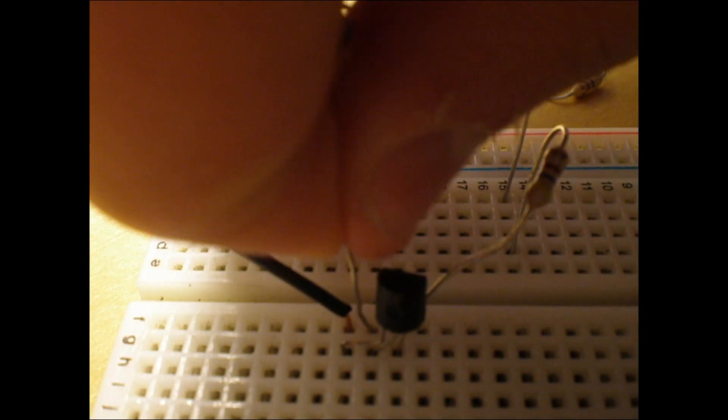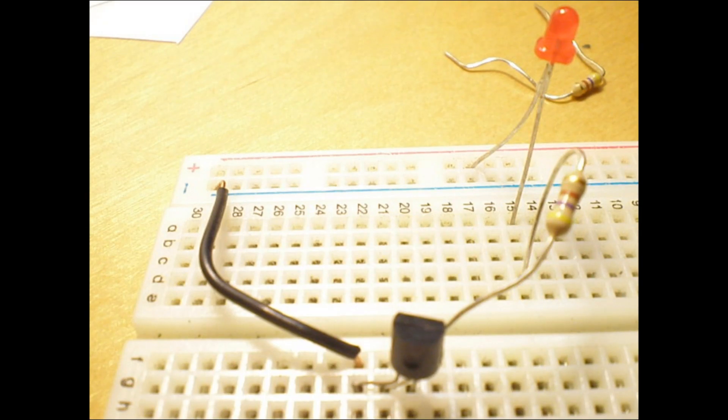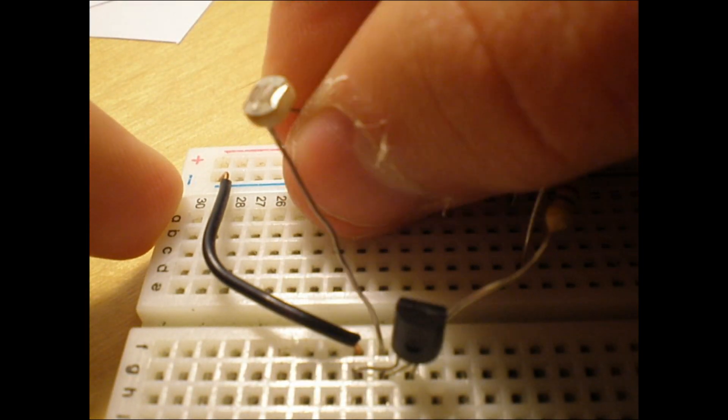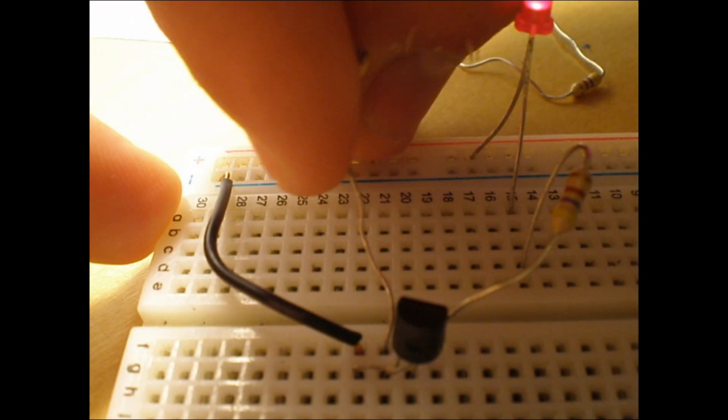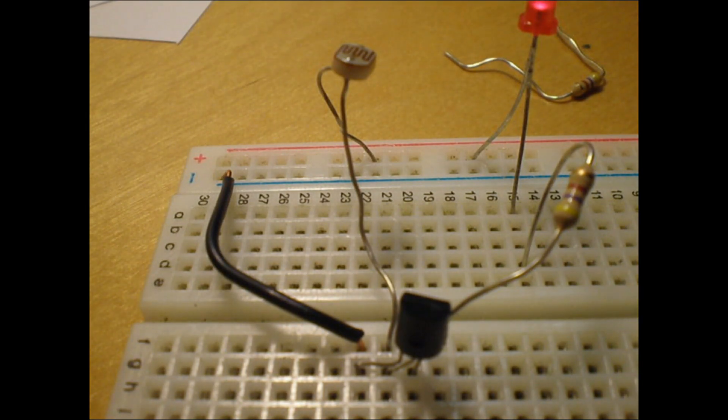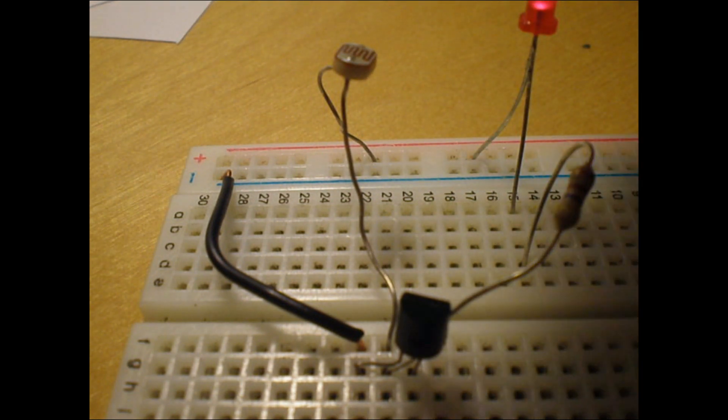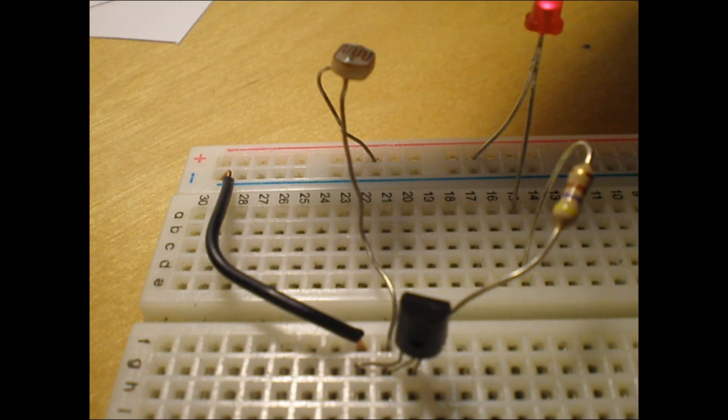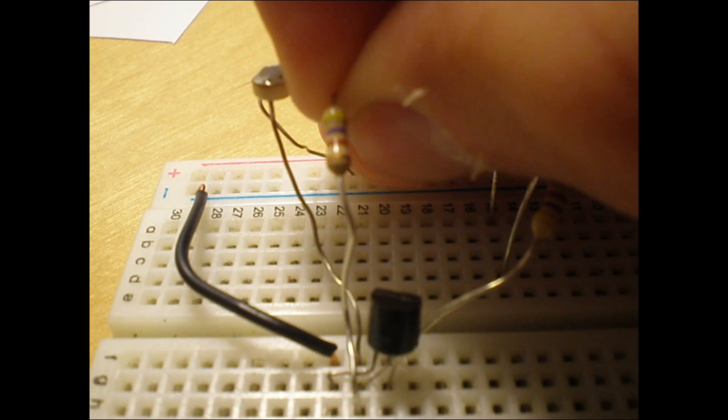Connect the base pin on your transistor to your photoresistor, and then the photoresistor to positive voltage also, because this is an NPN transistor, so you want positive voltage on your base pin. Take your other 1K resistor and connect it in parallel with your photoresistor, but connect the resistor instead of the positive voltage to the negative voltage.